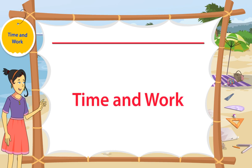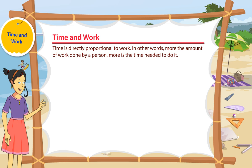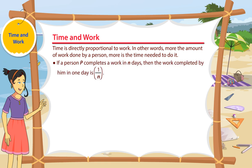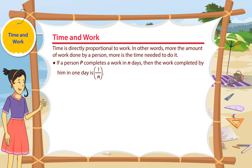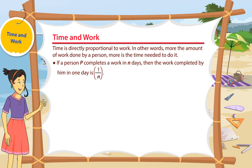Time and Work: Time is directly proportional to work. In other words, more the amount of work done by a person, more is the time needed to do it. If a person P completes a work in N days, then the work completed by him in one day is 1 by N.